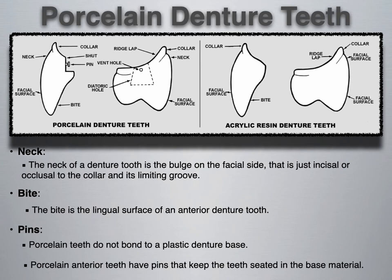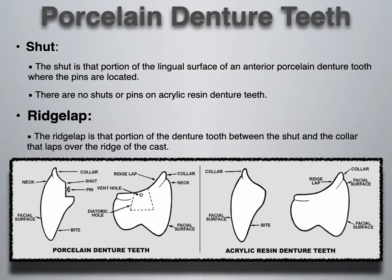The bite is the lingual surface of an anterior denture tooth. The shut is the portion of the lingual surface of an anterior porcelain denture tooth where the pins are located. The pin and the shut are two areas on a porcelain tooth that do not exist on an acrylic tooth.